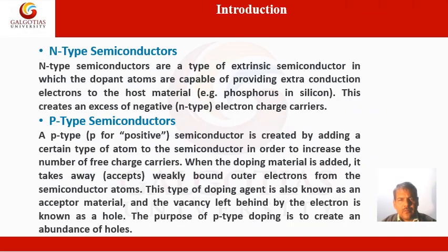N-type semiconductors are a type of extrinsic semiconductor in which the dopant atoms are capable of providing extra conduction electrons to the host material. For example, phosphorus in silicon. This creates an excess of negative, N-type electron charge carriers.